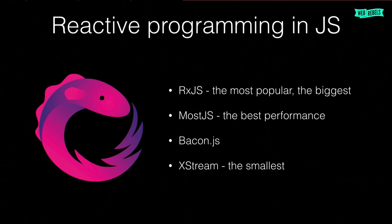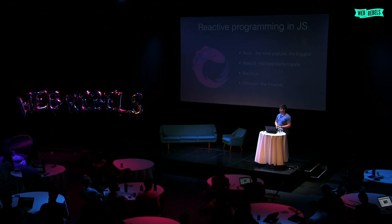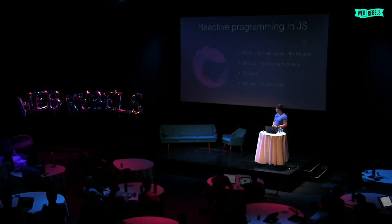Next is MostJS — they claim they have the best performance and have numbers to prove it with benchmarking on their website. The library is not that big, and if you really want good performance, you can go with MostJS. Then there's Bacon.js — it's also a mature, well-known library. And XStream, created by Anders Stoltz — the guy from the first slide. It's the smallest one, with about 20 methods inside, and that's really enough to start with for some medium-sized apps. If you just want the regular stuff from reactive programming, you can go with XStream — it's small enough and the documentation is good.